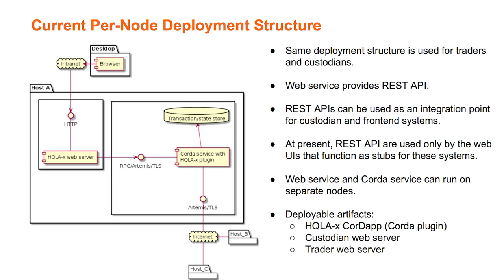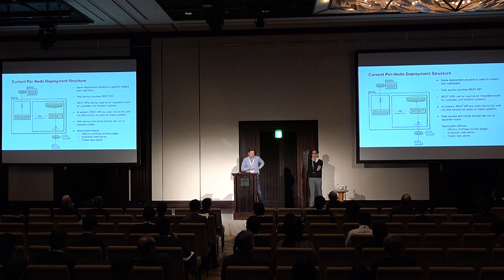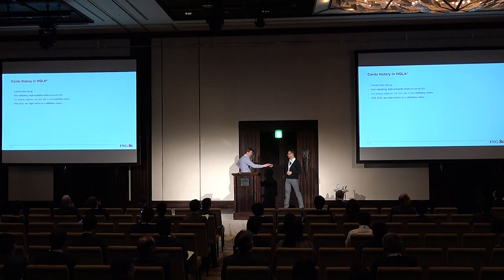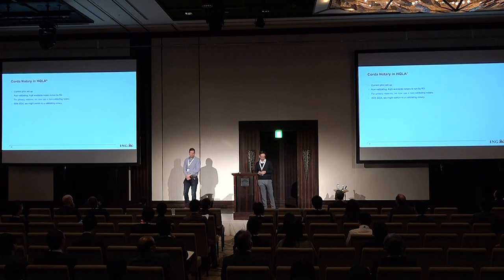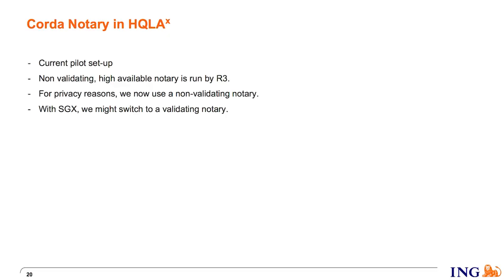The HQLAX deployment contains two parts: the Corda node and a web server that talks RPC to Corda and exposes a REST API to user interfaces or bank backend systems. We currently use a non-validating notary because we don't want to share transaction details with the notary node. That might change if SGX becomes available — we might then switch to a validating notary, which has some advantages.